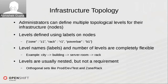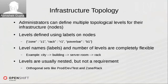Regarding infrastructure topology in detail: administrators can define multiple levels, and these can be any level — zone, racks, power bars. The way administrators define this is through labels on the nodes. For example: zone equals Z1, rack equals R1, power bar equals B1. These are what the scheduler picks up for infrastructure topology levels. Level names and the number of levels are completely flexible — no fixed specification on naming or quantity.